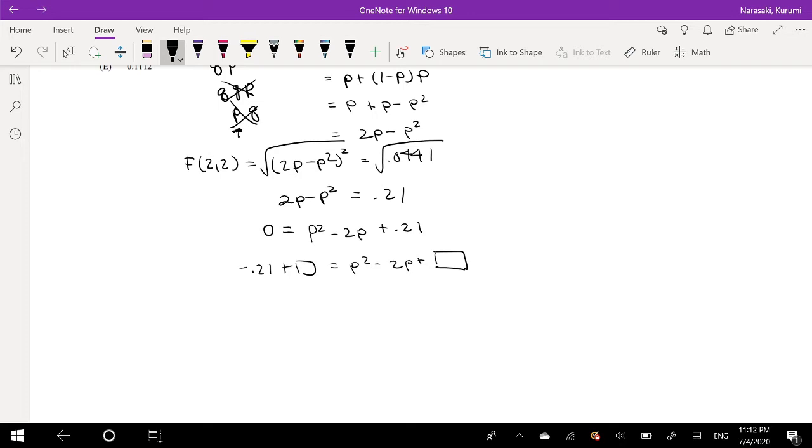So if you remember how to complete the square, we would have to divide this by 2, so that's negative 1, and we square it, so that's just 1. We do that to both sides, so this side is going to equal 0.79 equals P minus 1 squared.